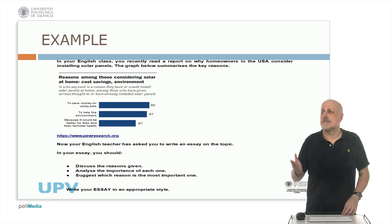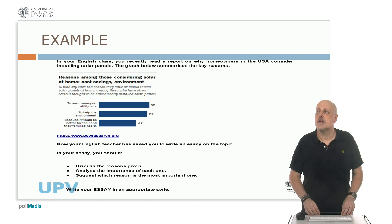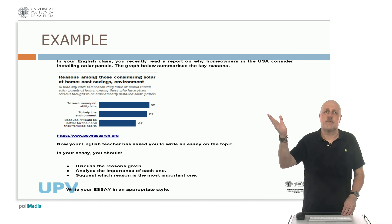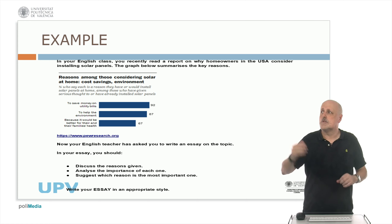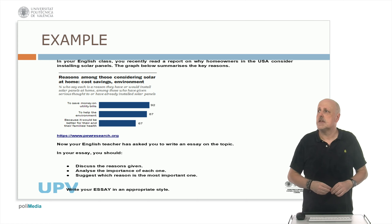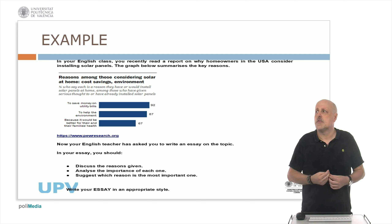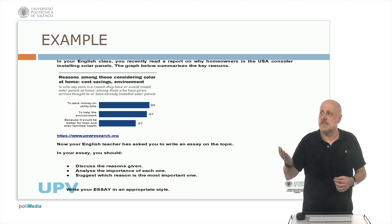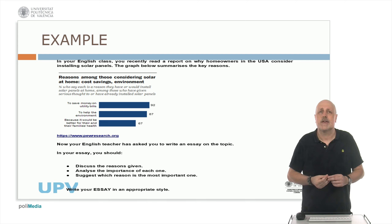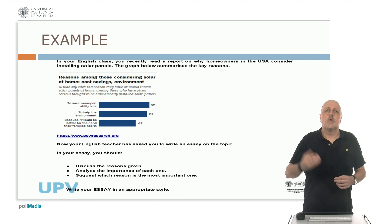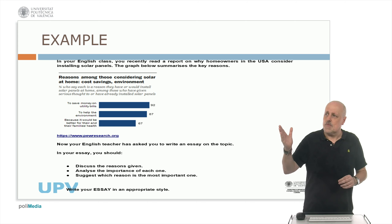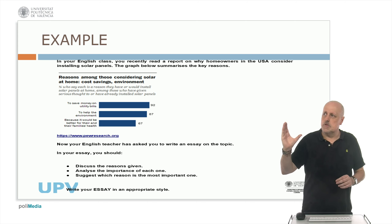Here we have an example. You can see there's quite a bit of reading to do. It's very typical to have, for example, a graph, as you have here. This is to do with the installation of solar panels and why homeowners in the USA decided to do it. There are three reasons. So what you have to do is look for the key points.